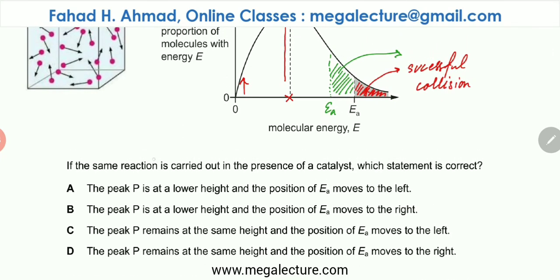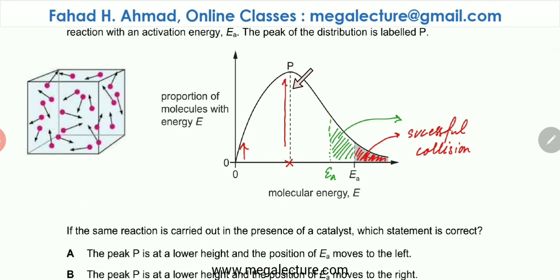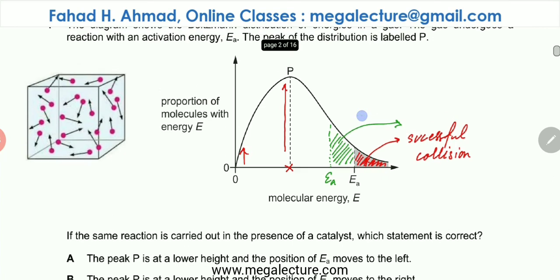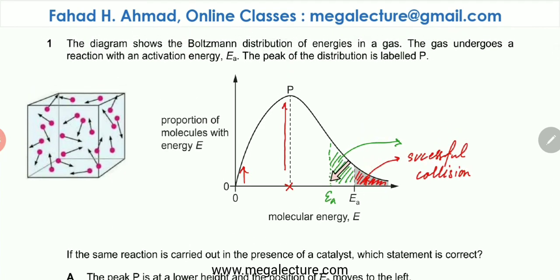The options for the same reaction carried out in the presence of a catalyst are: Option A — the peak is at a lower height and the position of Ea moves to the left. Nothing happens to the shape or energy distribution; the catalyst simply shifts the activation energy to the left, so the peak height changing is incorrect. Option B — the peak P is at a lower height and Ea moves to the right — again, nothing happens to the peak. The correct answer is that peak P remains at the same height and the position of Ea moves to the left. The graph remains exactly where it is, except the activation energy has moved to the left.